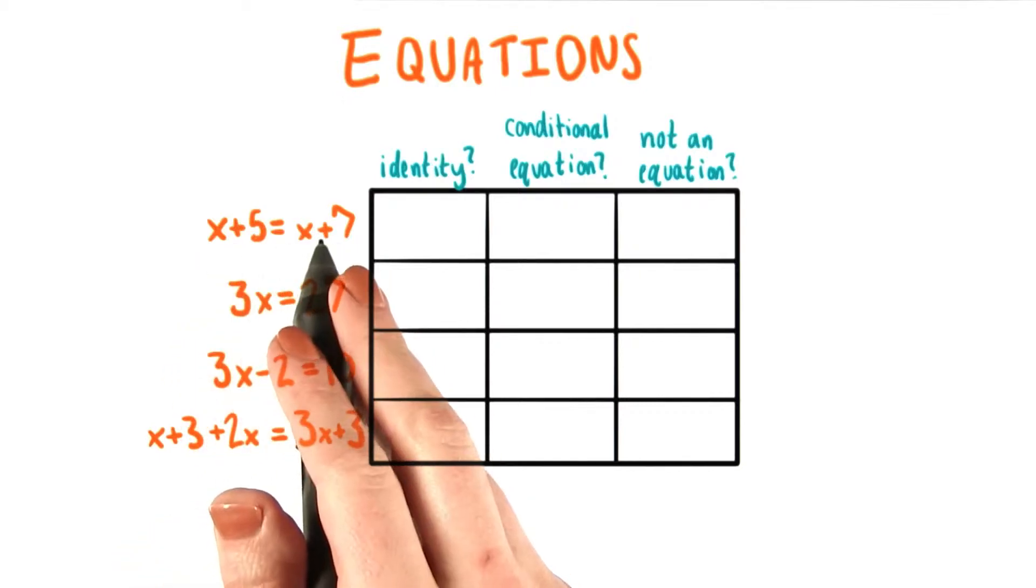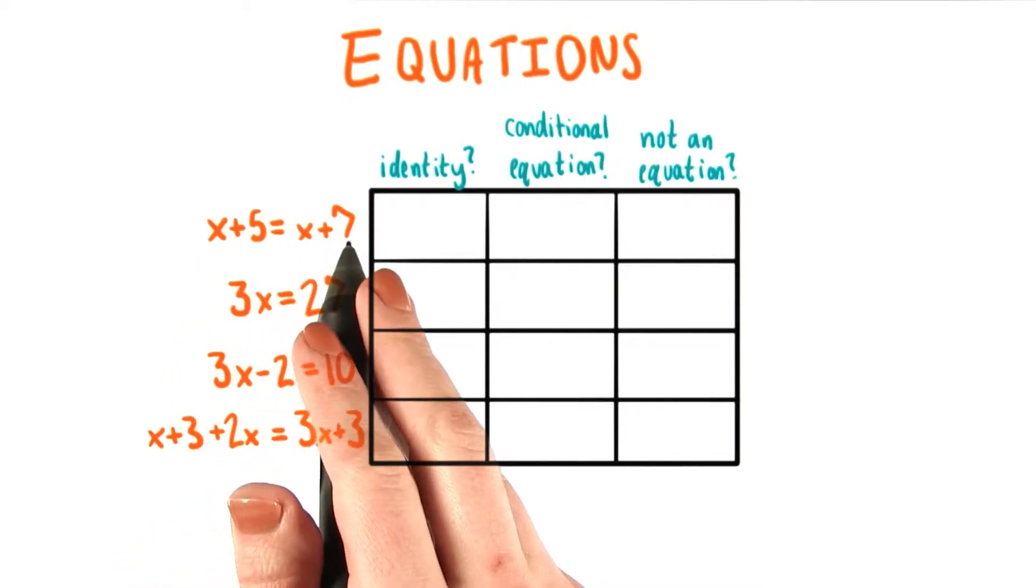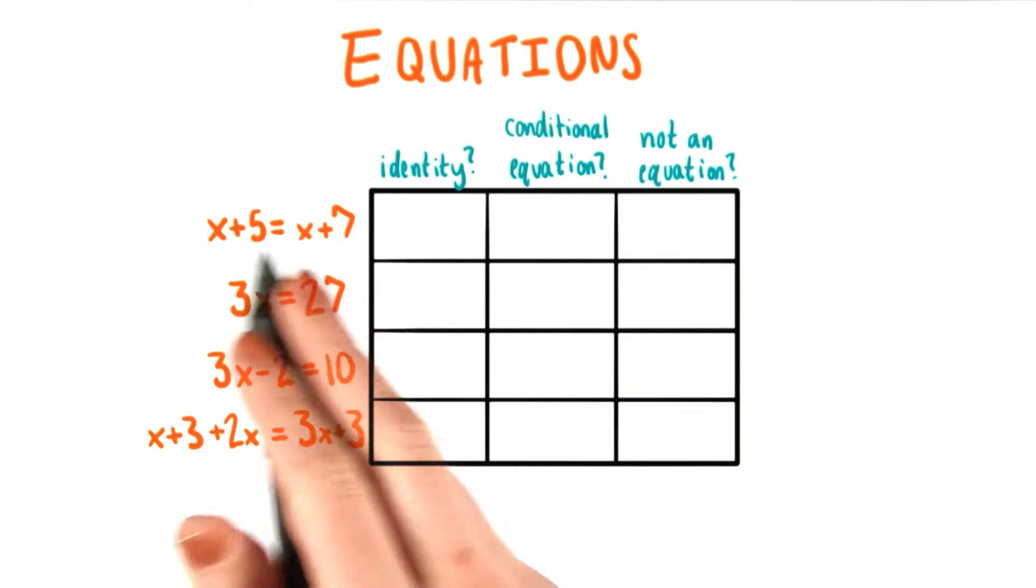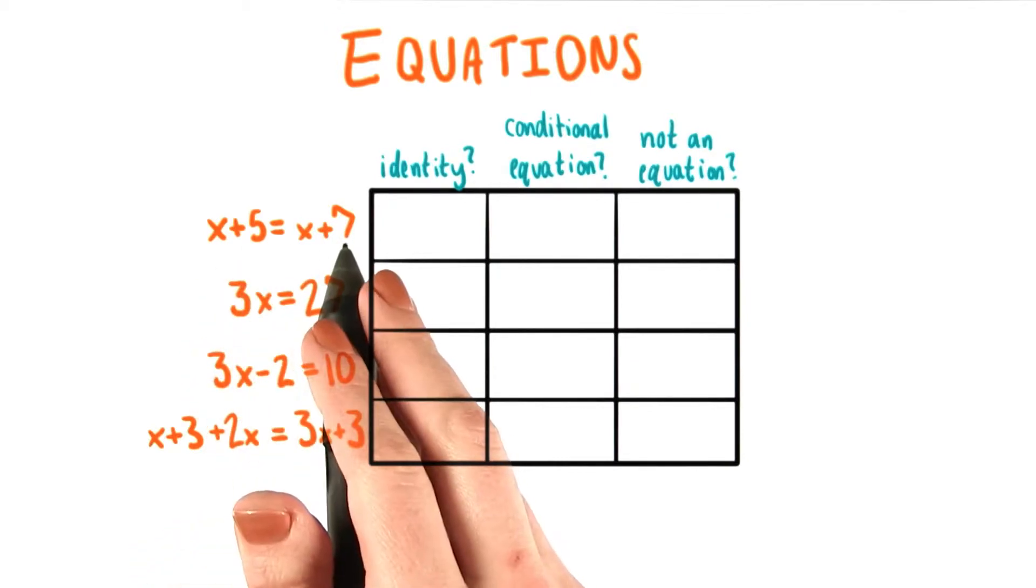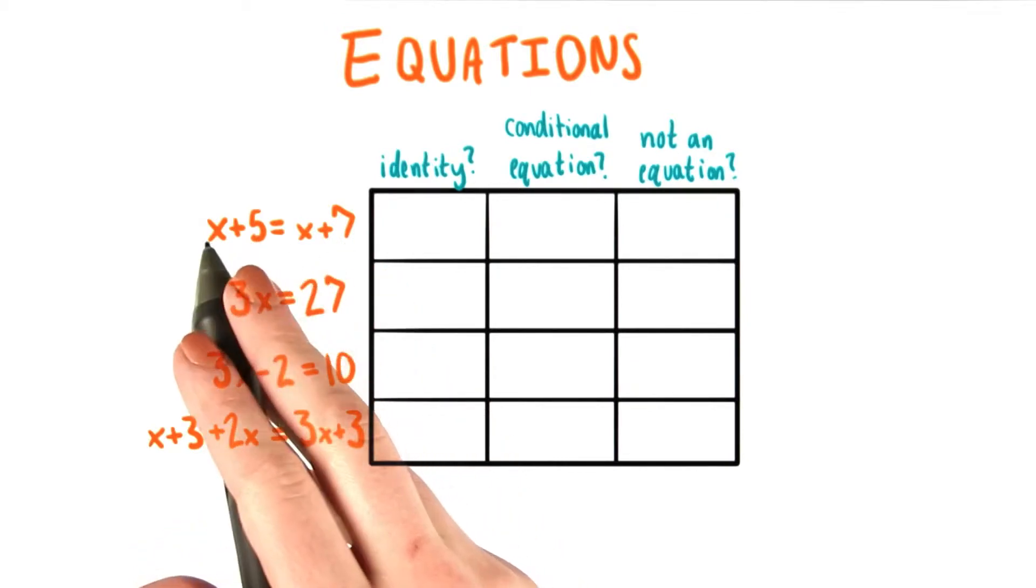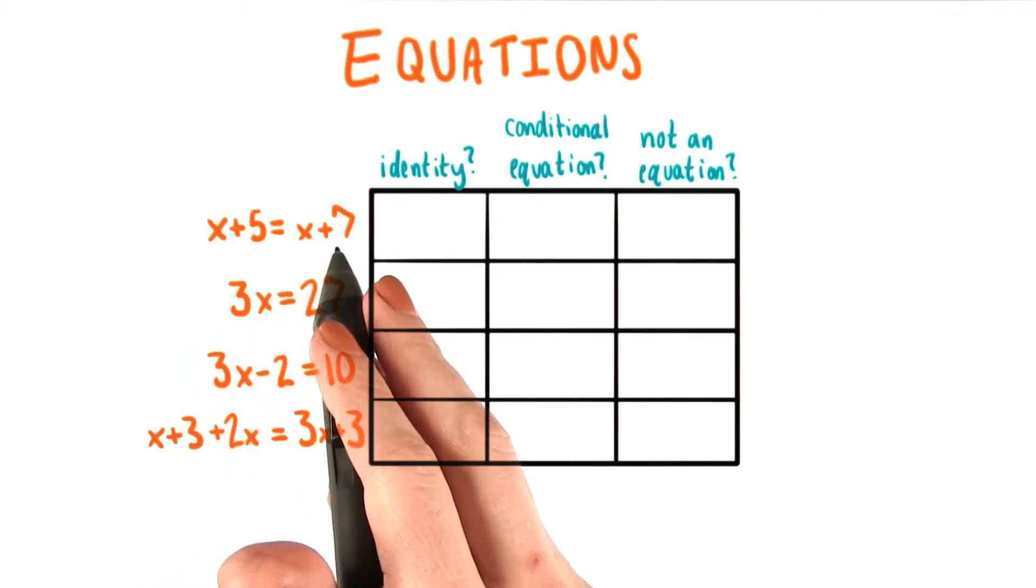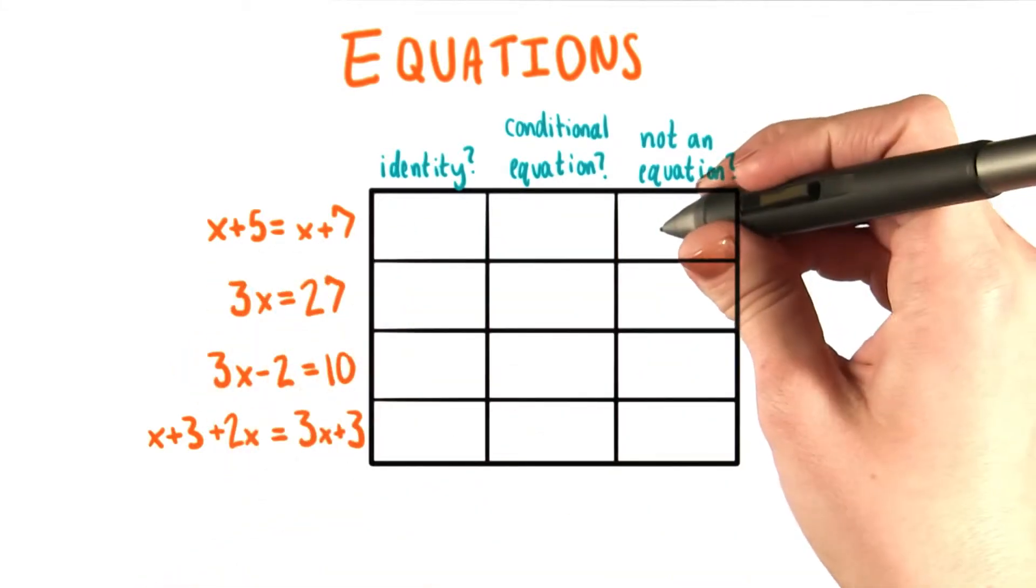For this first equation, x+5 = x+7, the right side of the equation is always going to be 2 greater than the left side, since 7 is 2 greater than 5. Since no value of x can make these two sides equal to each other, this is not an equation.